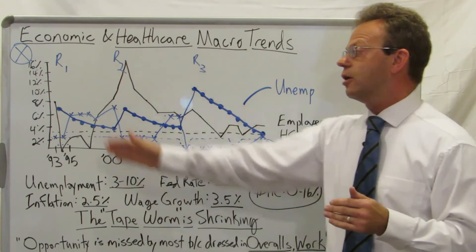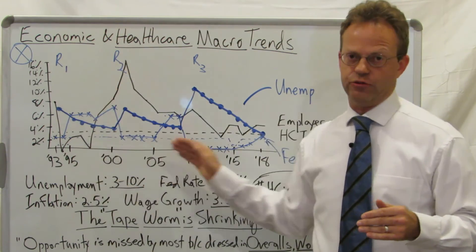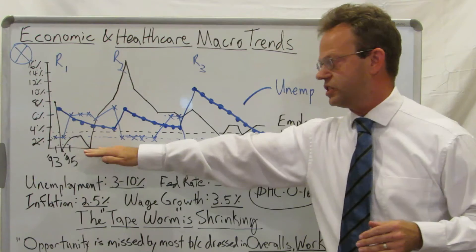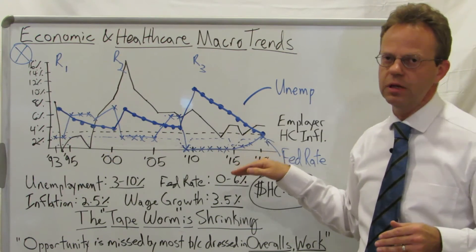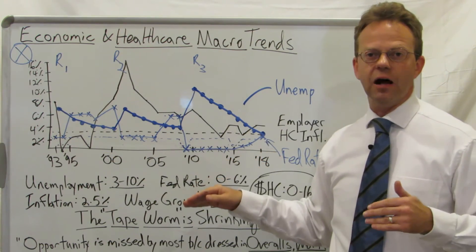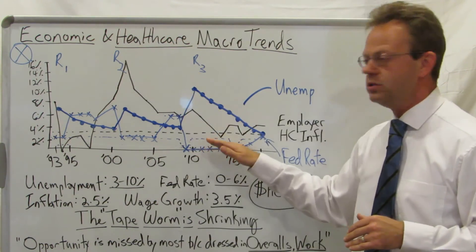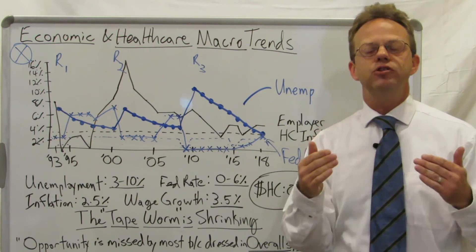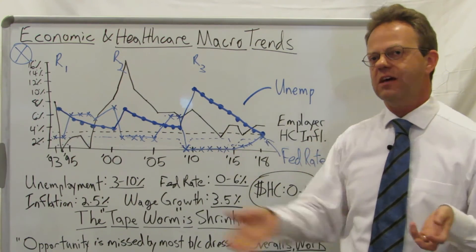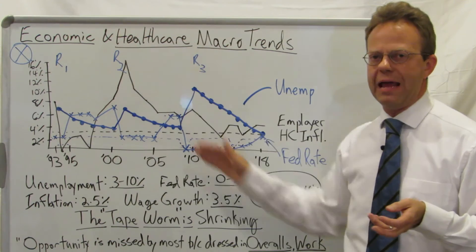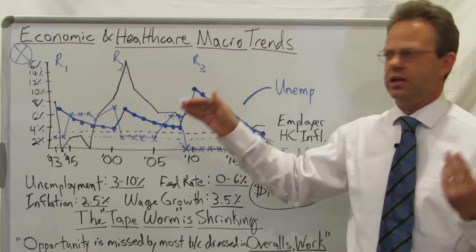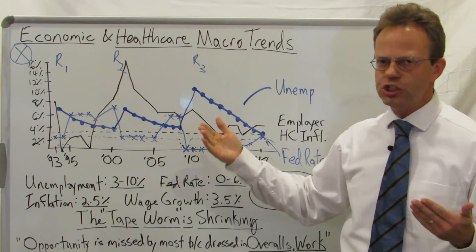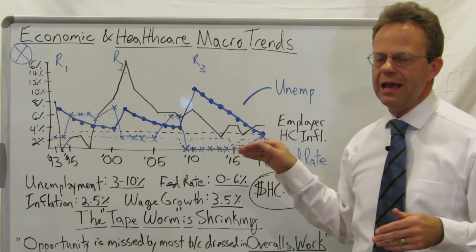It goes down for some organizations faster than others. John Tornis with Serigraphic came down to zero and it's been zero for a long time. The state of Montana came down to negative. Individual employers and individual agents have been able to dramatically lower healthcare costs much faster than others, while other people have been hanging higher. But in general, it has been coming down.